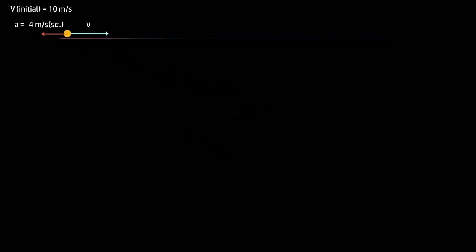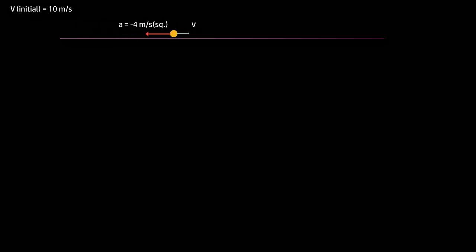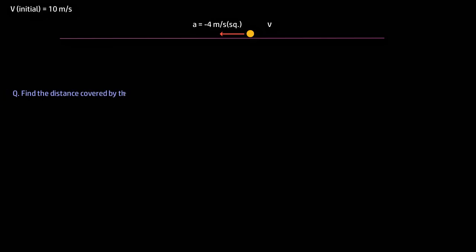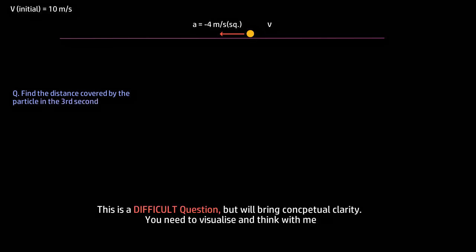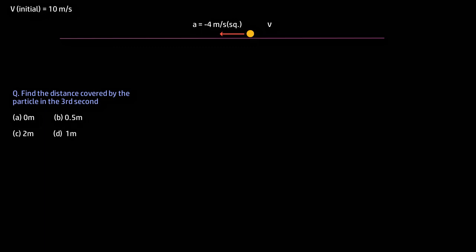What we have here is a particle moving with a velocity of 10 meters per second and a constant retardation of 4 meters per second squared. The question is: find the distance covered in the third second. The options given are A: 0 meters, B: 0.5 meters, C: 2 meters, and D: 1 meter.